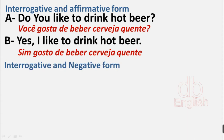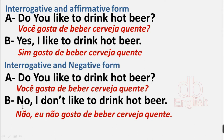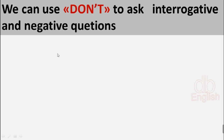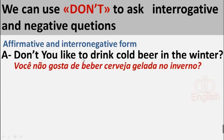Interrogative and negative form. A: Do you like to drink hot beer? B: No, I don't like to drink hot beer. Don't forget: we can also use 'don't' to ask interrogative negative questions. For example — Don't you like to drink hot beer in the winter?